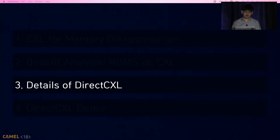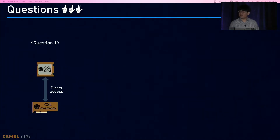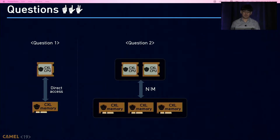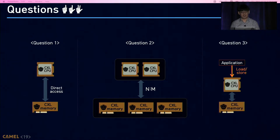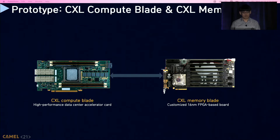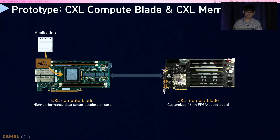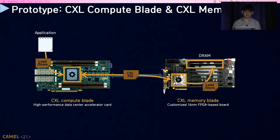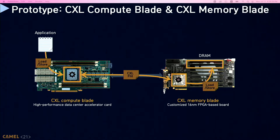I will explain how we designed Direct CXL by answering three design questions: first, how can a CPU directly access remote memory? Second, how do we realize memory disaggregation using CXL? Third, how can an application use CXL-attached remote memory? To enable CPU to access remote memory, load/store instructions issued by the CPU are directly converted to CXL packets. We prototyped the CXL CPU on a high-performance accelerator card and the CXL memory device on a customized FPGA board. When an application issues a memory request, the CPU converts it into a CXL packet called a CXL flit. When the CXL flit arrives at the CXL memory device, it converts the flit back to a memory request and serves it using the underlying DRAM.